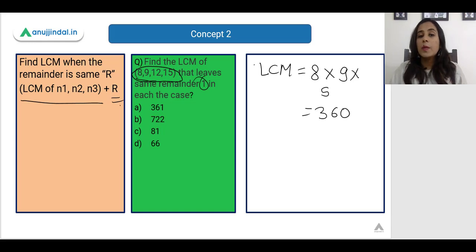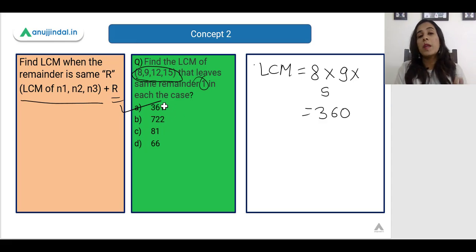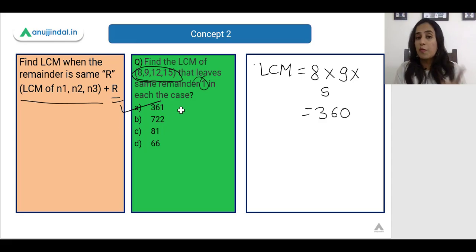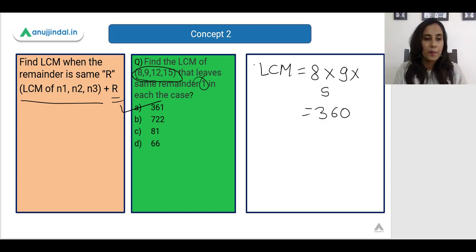We add 1 to 360 and get the answer 361. If you divide 361 by 8, 9, 12, or 15, you will get the same remainder of 1 in each case.